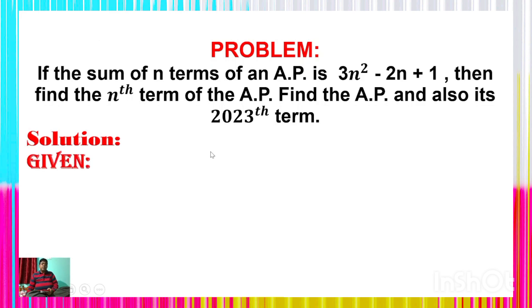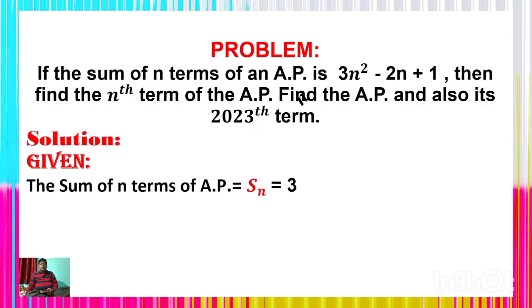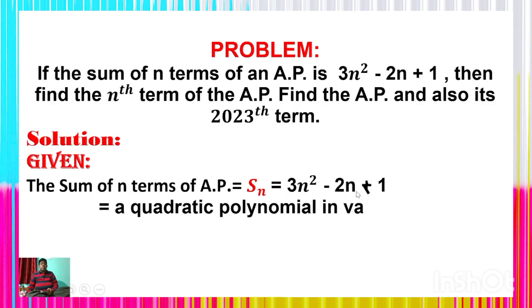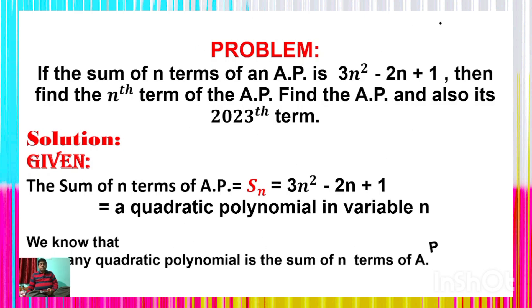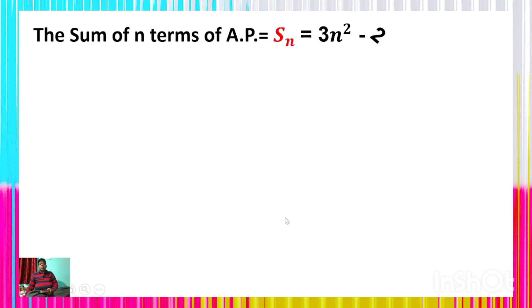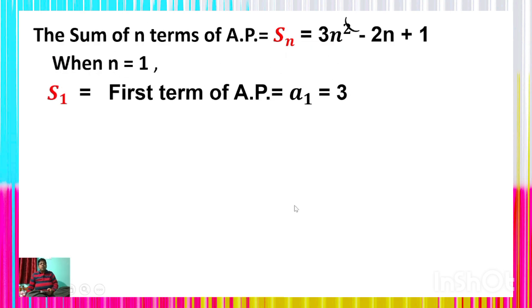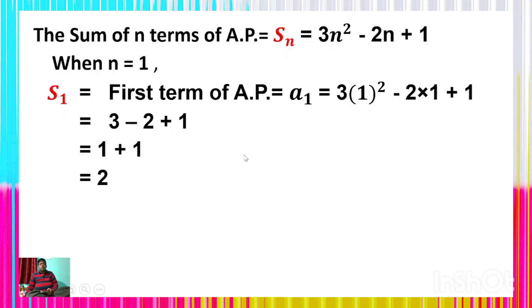Look at the solution. Given: S_n = 3n² − 2n + 1. Since this is a quadratic polynomial in n, it represents the sum of n terms of an AP. When n = 1: S_1 = a_1 = 3(1)² − 2(1) + 1 = 3 − 2 + 1 = 2. Thus the first term a = 2.